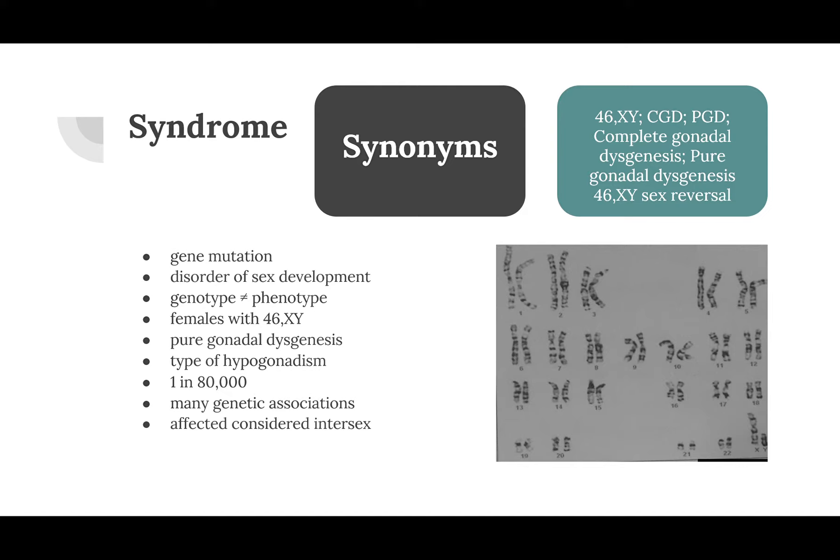Affected individuals are medically considered intersex. Moreover, there are many medical synonyms for Swire syndrome, because 'Swire' comes from the name of the person who first documented the case. Swire syndrome can also be called 46 XY CGD or PGD, which are abbreviations for complete gonadal dysgenesis and pure gonadal dysgenesis. It can also be referred to as sex reversal.